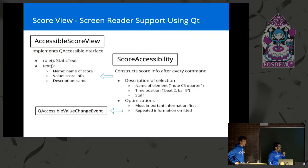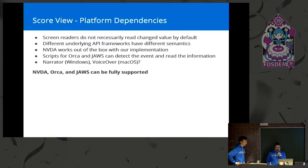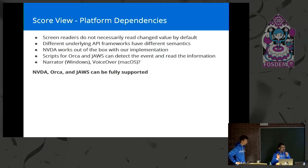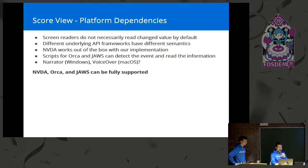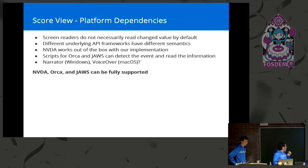In an ideal world, sending the QAccessibleValueChangeEvent would be all you need — but it's not an ideal world. Different screen readers decide independently whether they care that a widget's value changed. NVDA works out of the box — it's a free, open source screen reader for Windows, which is our biggest platform, so that hits a lot of users at once. For other screen readers and platforms, they have different APIs that Qt only partially abstracts. We were able to create scripts for Orca on Linux and JAWS, the most popular Windows screen reader, so we now fully support Orca, JAWS, and NVDA within MuseScore.